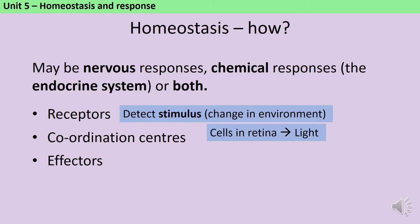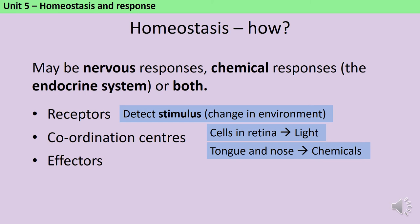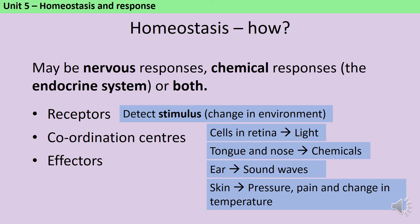Receptors are cells that can detect a stimulus, which means a change in the environment. For instance, the cells in your retina at the back of your eye are able to detect light. There are cells in your tongue and your nose which are able to detect chemicals. The receptors in your ear are sensitive to sound waves, and your skin has receptors that are sensitive to pressure, to pain, and to changes in temperature — all of these are examples of receptors.